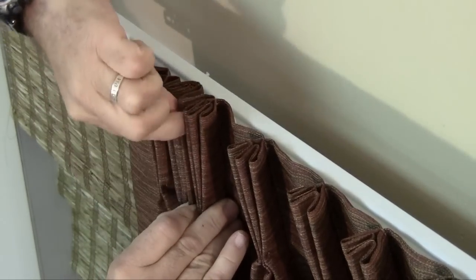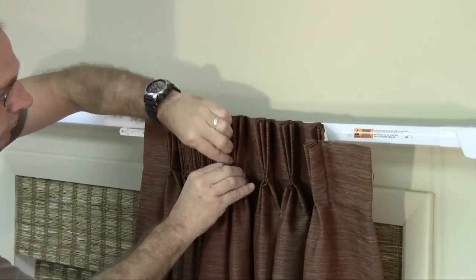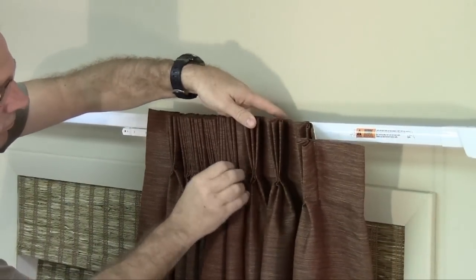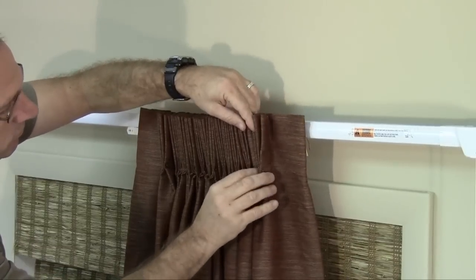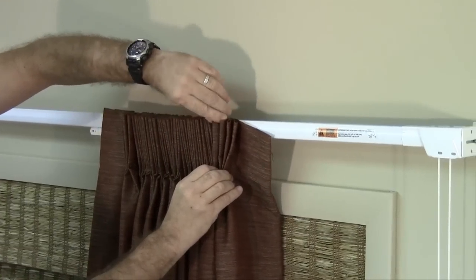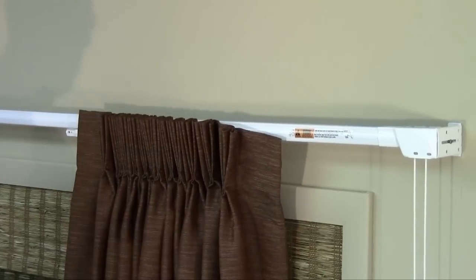For draperies that hang in front of the rod, on standard traverse rods, the buckram should be creased forward as we are showing here. For draperies hanging below the rod, on decorative rods, the buckram should be creased towards the rear of the drapery.